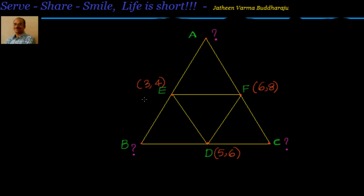We know that if the midpoints of two sides of a triangle are joined, then the line segment formed is parallel to the third side. For example, if AB and AC are two sides and the midpoints are E and F, then EF is parallel to BC. Similarly, if you join midpoints E and D of sides AB and BC, the line segment formed is parallel to the third side.